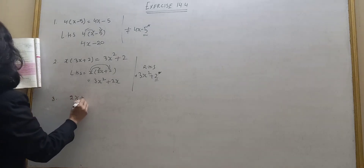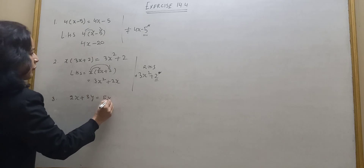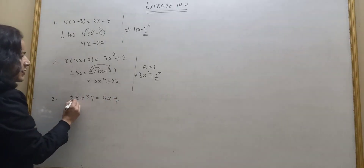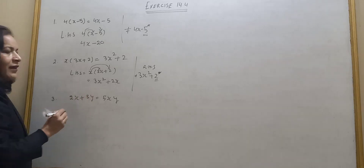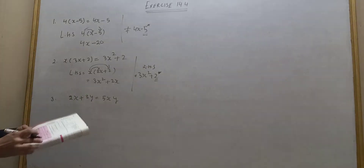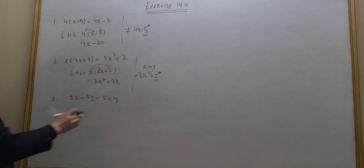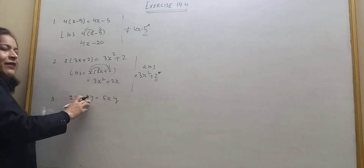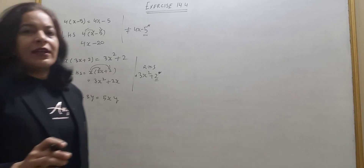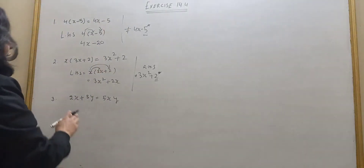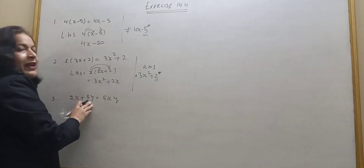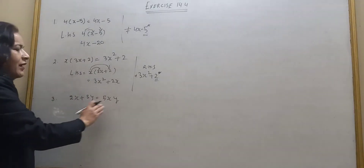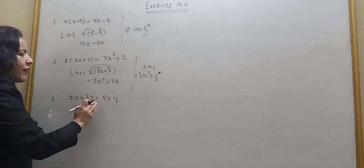Next part: 2x plus 3y is equal to 5xy. Let's find the error. It is 2x plus 3y. Can I add 2x plus 3y to get 5xy? No — 2x plus 3y cannot be added because x and y are different variables. We cannot add them. So it cannot be equal to 5xy.